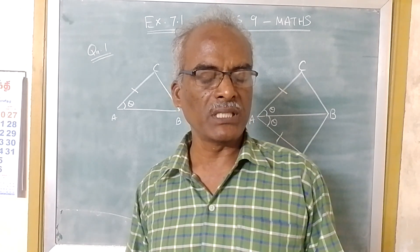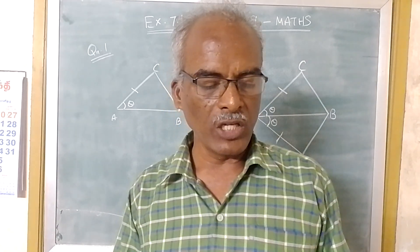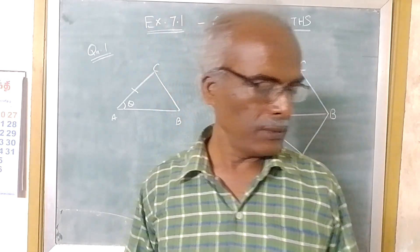Show that triangle ABC is congruent to triangle ABD. What can you say about BC and BD? So this is the question.